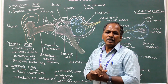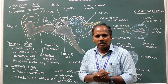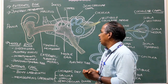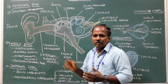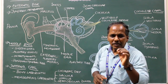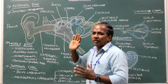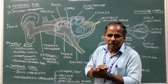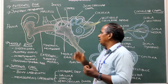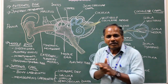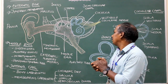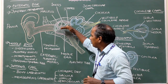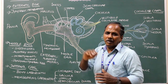Middle ear cavity, also known as the tympanic cavity or tympanum, is an air-filled cavity present in the petrous part of the temporal bone. It is divided into three subdivisions: epitympanum, mesotympanum, and hypotympanum.